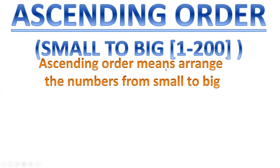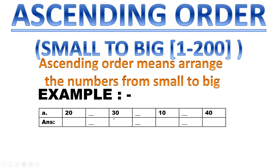Ascending order means arrange the numbers from small to big. First you have to select the smallest number first. Example: 20, 30, 10 and 40. We have to take the smallest number from here. This is starting with 2, this is starting with 3, this is starting with 1, and this is starting with 4. Which will be the smallest number here? Definitely it is 10.